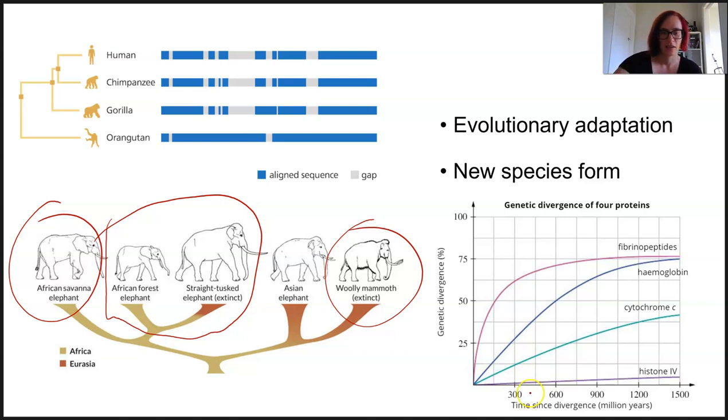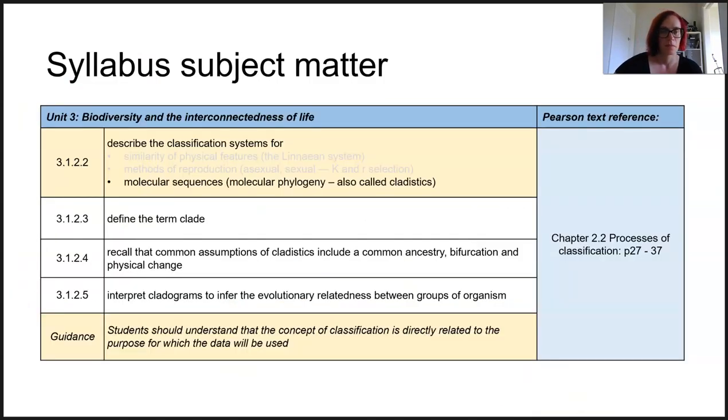You can have a look at different time graphs as well and genetic divergence to see certain genes and how they actually change over time. So remember this was our third remaining information on how to describe classification systems and this was about molecular sequences.